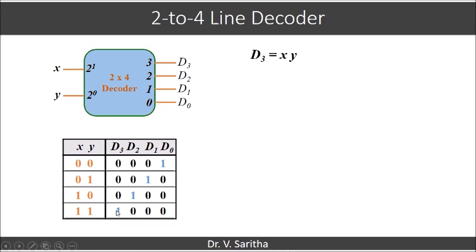So d3 is 1 when both x and y are 1, 1, so d3 is x y. If you see d2 is 1 in case where x is 1 and y is 0, so d2 is x y bar.